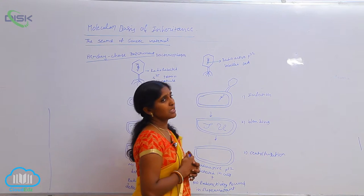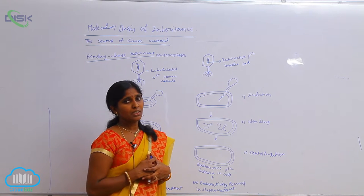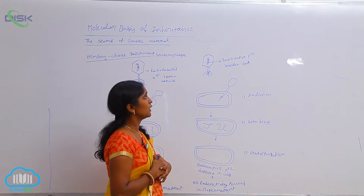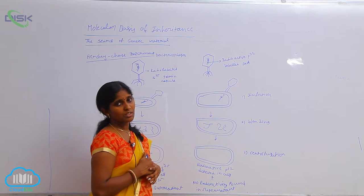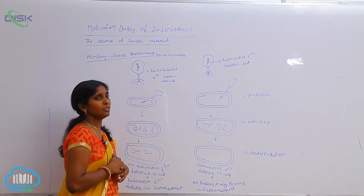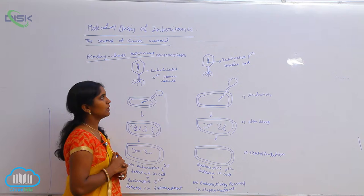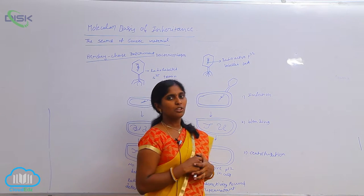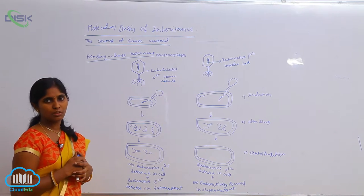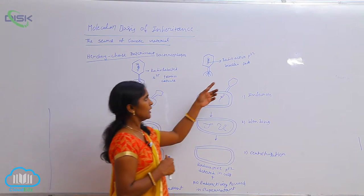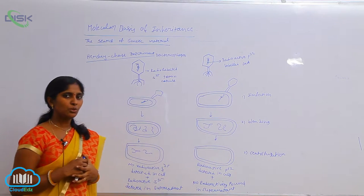In the next culture, they used the P32 radio-labeled isotope. Phosphorus is the key component for DNA. That's why, in the place of the phosphate molecule, the radio-labeled P32 is incorporated. Hence, the DNA of the bacteriophage is turned into the radio-labeled P32 DNA, but the capsule is turned into the S35 protein capsule. So here we have radioactive P32 labeled DNA.